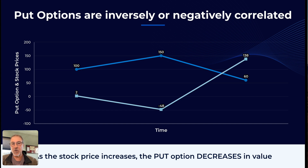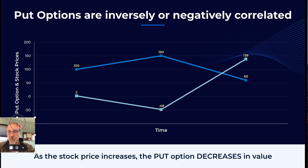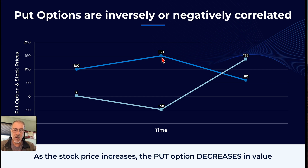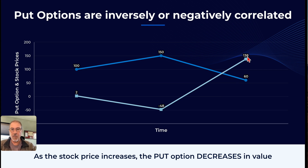Put options are inversely or negatively correlated to the underlying. What that means is: as the price of the underlying goes up in value, the price of the put will drop in value, and vice versa — if the price of the underlying drops in value, that put becomes more valuable. So if your house is worth $150,000 and it suffers massive damage — say $90,000 in damage — that value goes up, and you now have an insurance policy you can cash in for that missing portion.